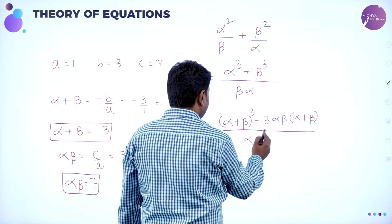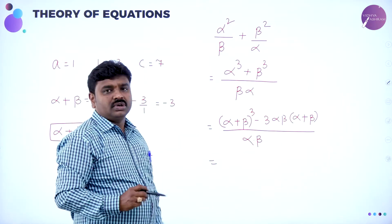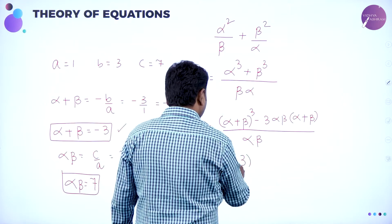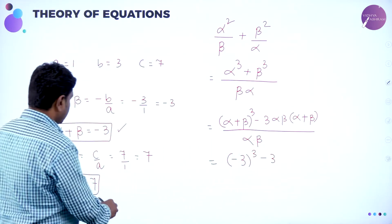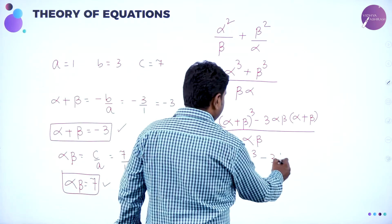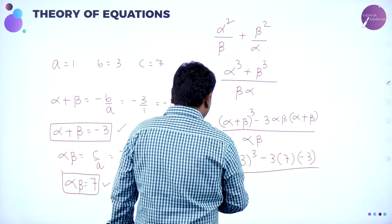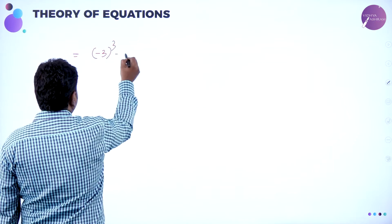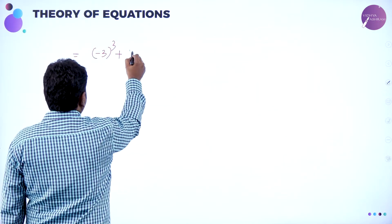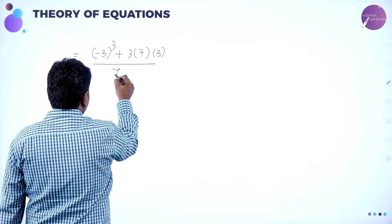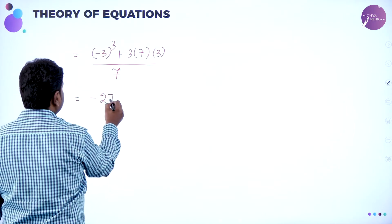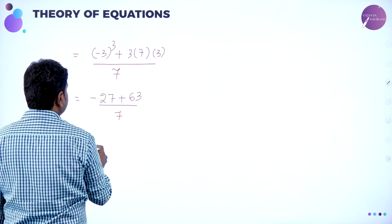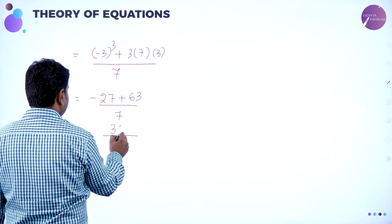Simplify alpha squared by beta plus beta squared by alpha. Take LCM, which is alpha into beta. Cross multiply: alpha squared into alpha is alpha cube, plus beta squared into beta is beta cube. Using the identity, alpha cube plus beta cube equals alpha plus beta whole cube minus 3 alpha beta into alpha plus beta. Substituting: minus 3 whole cube minus 3 times 7 times minus 3, divided by alpha into beta which is 7. Simplifying: minus 27 plus 63 divided by 7 equals 36 by 7.